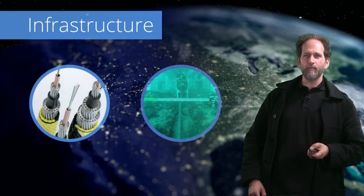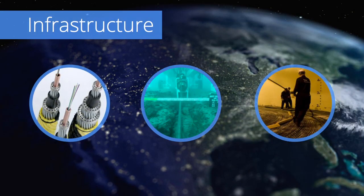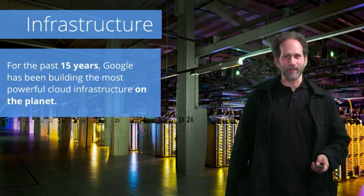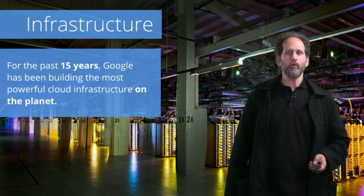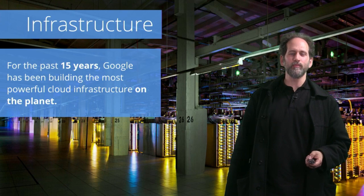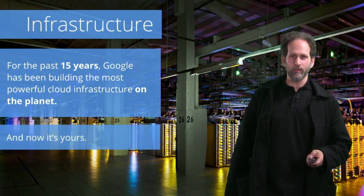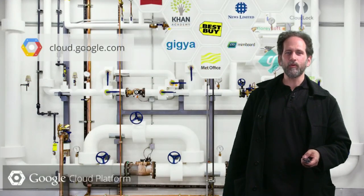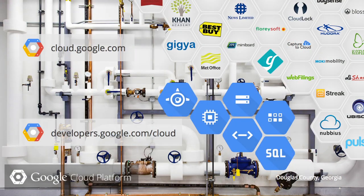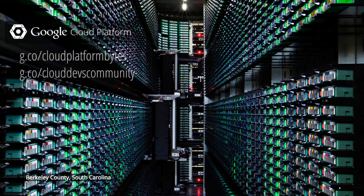So what brings us to Google Scale? It's the pipes and wires, bolts and fiber, engineering excellence, and raw computing power. This data center in Finland is green because it is built in an old mill, using the pre-existing water infrastructure to cool our server racks. In fact, we've spent the last 15 years engineering beautiful solutions — solutions we can now share with you. Come to cloud.google.com, where you can see case studies, and go to developers.google.com/cloud to check out our APIs. Come and leverage the power of Google Scale. Thank you.